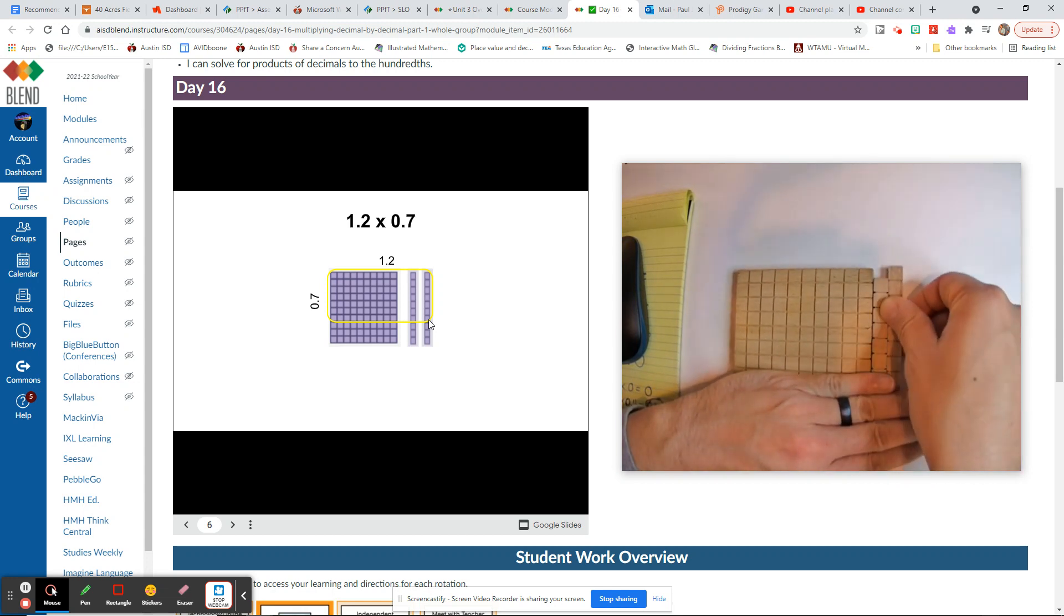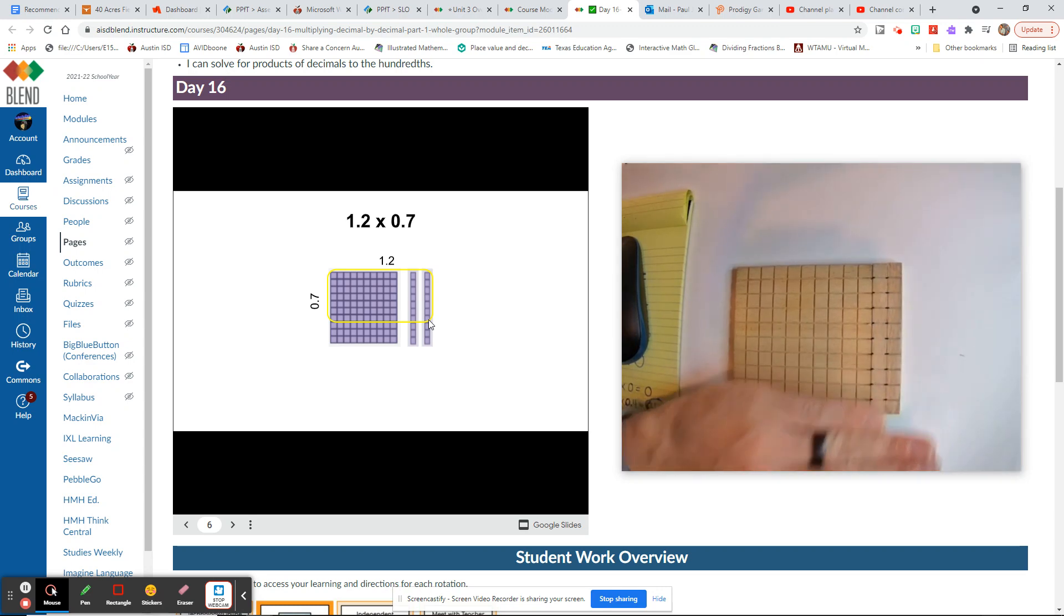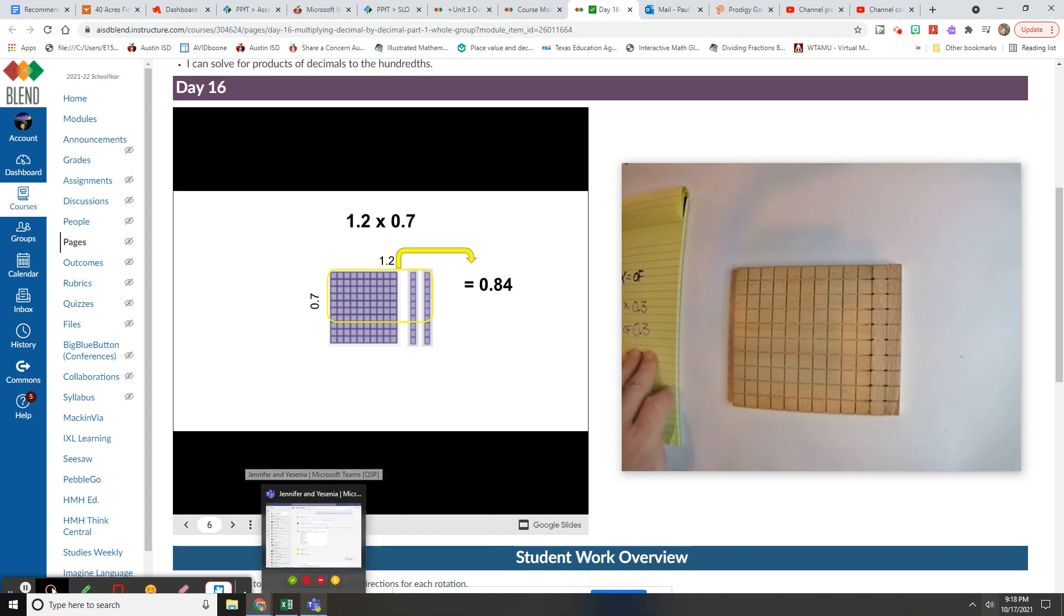we're going to get this many hundredths, and just counting up those hundredths, they get 84 hundredths. The easiest way for us to get our answer, besides counting all of those little pieces, is using our algorithm.